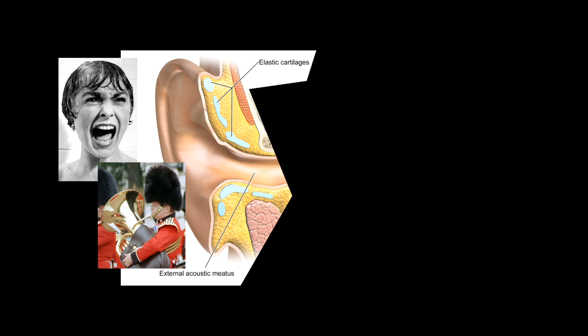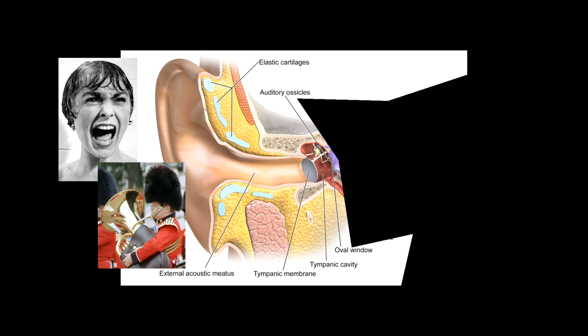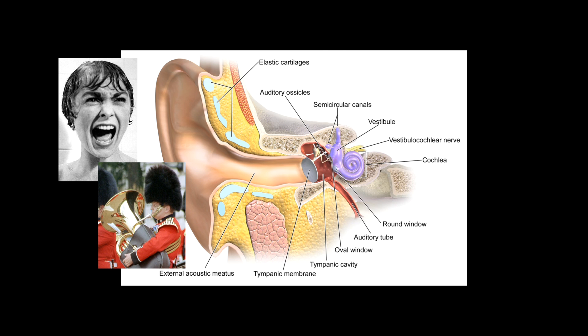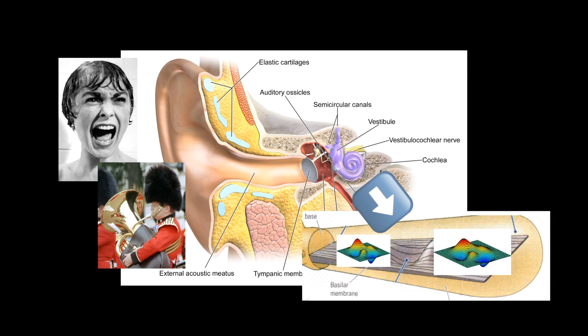Sounds enter the ear, make the eardrum vibrate, get transmitted through the ossicles into the fluid within the cochlea, which in turn makes the basilar membrane vibrate. Pretty much all of the hair cells get affected to a certain degree by any sound produced, but it's the brain's job to figure out what frequencies are heard by filtering out the weaker signals from the strongest ones.